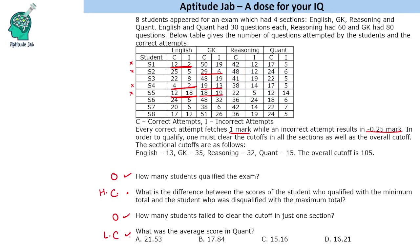In Reasoning, the cutoff is 32. Checking values — 4.3.5 clears the cutoff. This person will not clear the cutoff, this person will not clear the cutoff, this person will not clear the cutoff, and this person will also not clear the cutoff. So S6 and S8 are also not qualified.